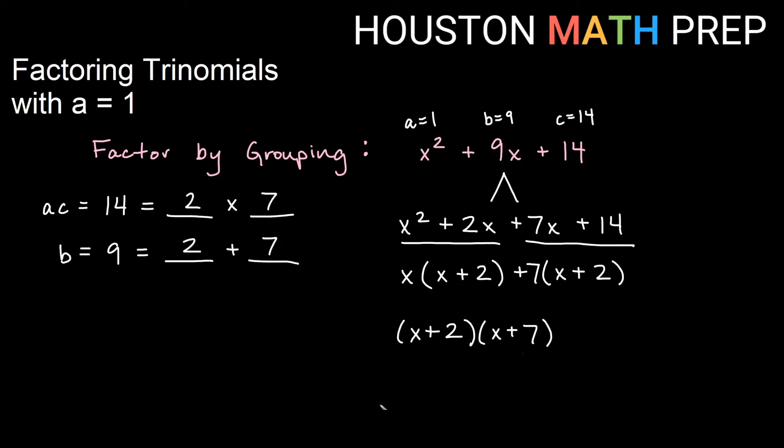What we want to see is the shortcut here is that if a is 1 and I do the factoring by grouping, what ends up happening is that the numbers that I choose, 2 and 7 in this case, that work out to give us the 14 and the 9, those numbers are also what appear in our factor. And that is something that is only guaranteed to happen when a equals 1.